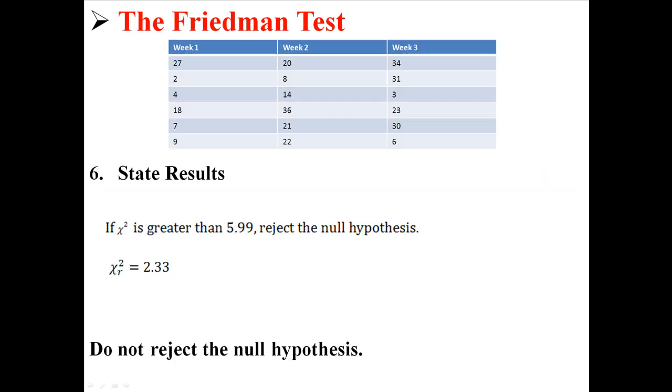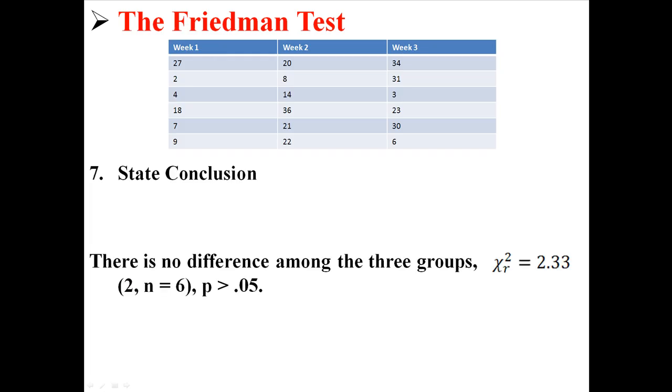So for our results, remember we were going to reject if chi-squared was greater than 5.99, and our chi-squared was 2.33. So we will not reject the null hypothesis. We can conclude that there is no difference among the three groups, using a Friedman test.